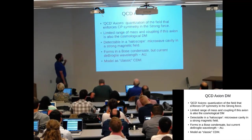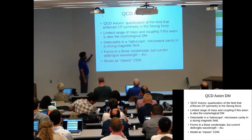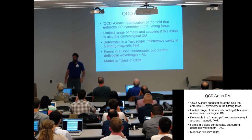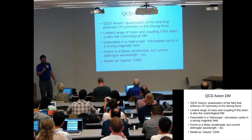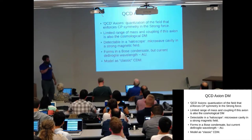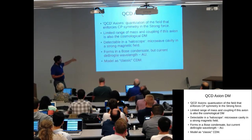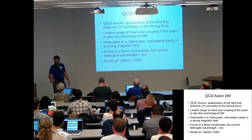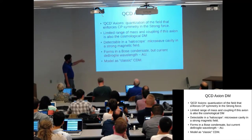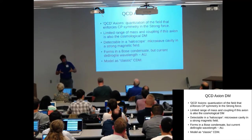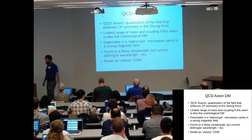Furthermore, it is weakly coupled to photons, and so it's detectable in what's called a haloscope, which is essentially a microwave cavity embedded in a strong magnetic field. It's cold because it forms in a Bose condensate during a phase transition in the early universe. But its de Broglie wavelength is of order AU, so not really detectable on cosmological scales. When we model it, we just model it as classic cold dark matter and use the collisionless Boltzmann equation.